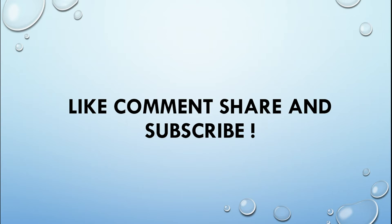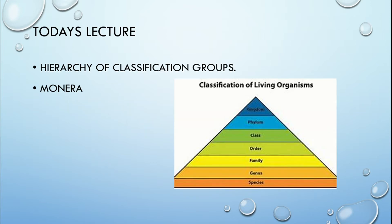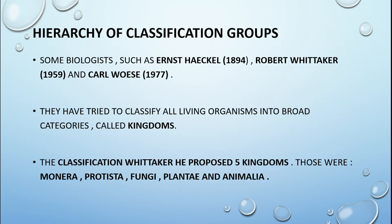In today's lecture, we are going to see the hierarchy of classification groups and the first kingdom, that is Monera. This hierarchy was given by biologists such as Ernest Haeckel, Robert Whittaker, and Carl Woese.